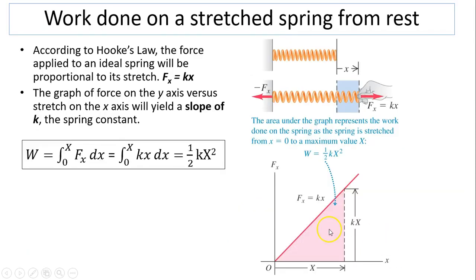Work done on the spring. When you stretch the spring, you apply a force fx equals kx according to Hooke's law. So this fx and x are in the same direction. The work done equals kx times dx. When you integrate this function, you get one half kx squared, and that is the area under this graph.